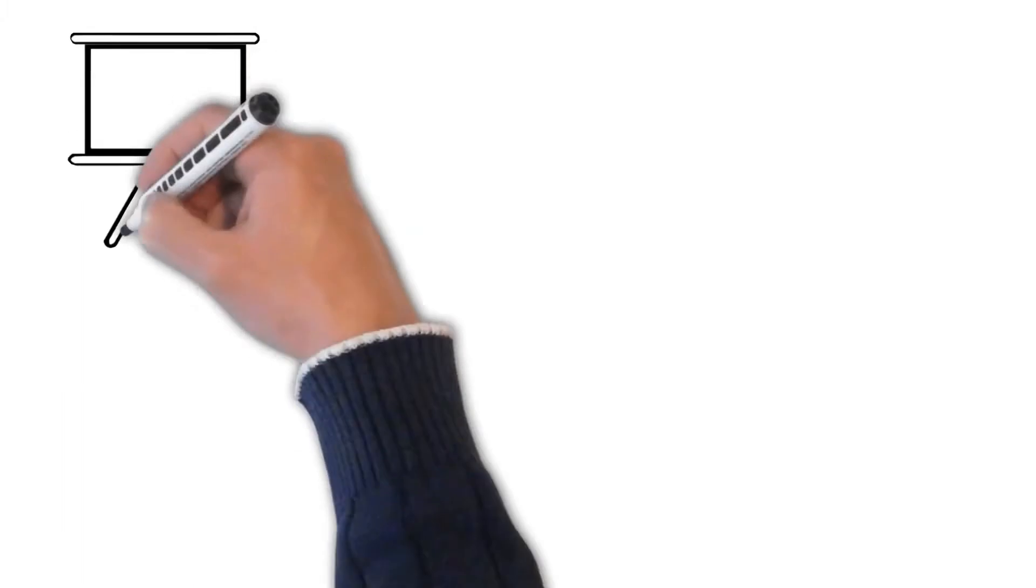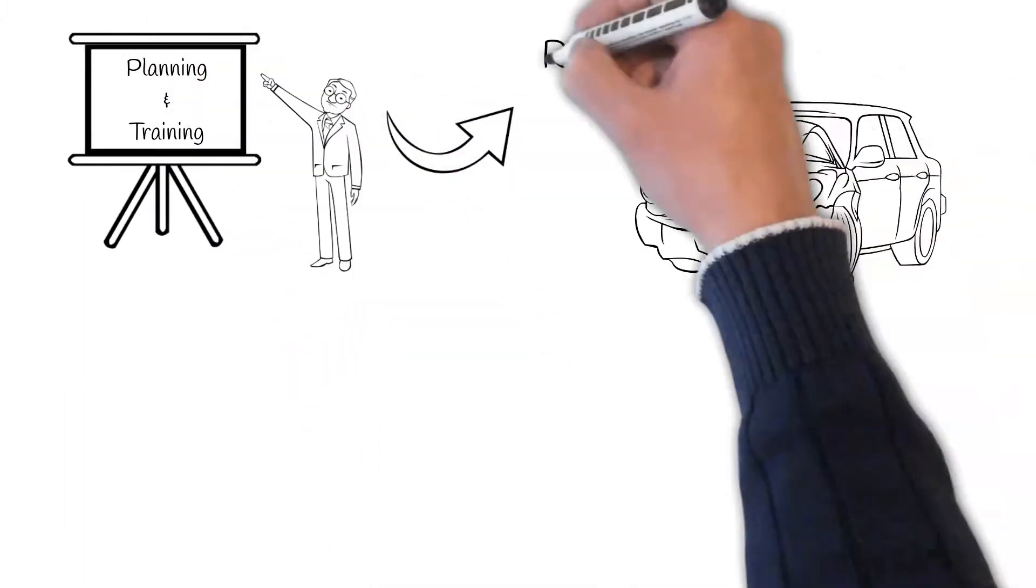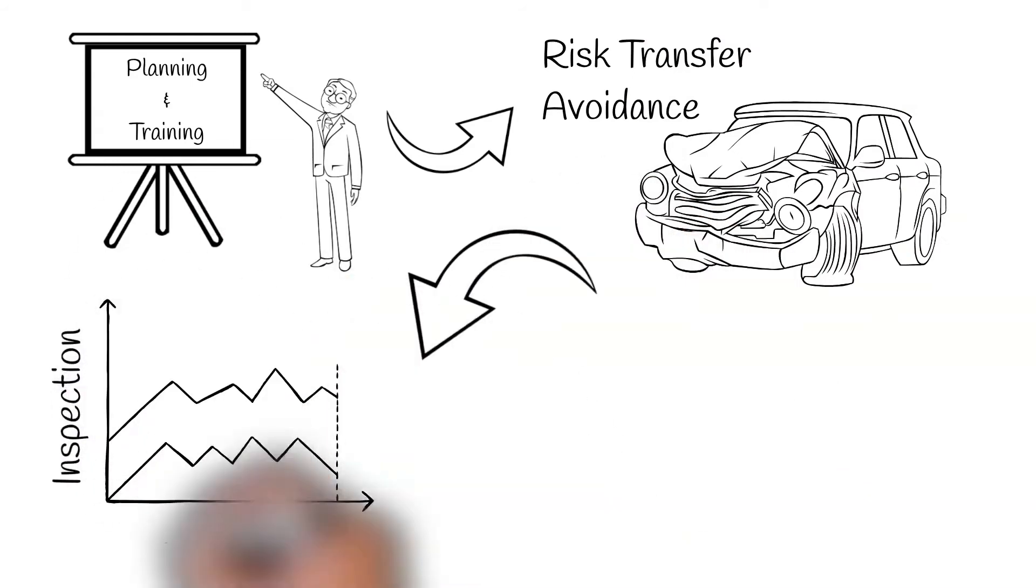The four key steps to managing risk are planning and training, risk transfer avoidance and mitigation, inspection and analysis, and insurance.